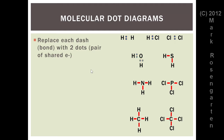Oxygen forms two bonds, so replace each with two dots. Hydrogen sulfide, same exact thing. Ammonia, exact same thing. Phosphorus trichloride has three bonds, giving three pairs of shared electrons. Methane, CH4, has four pairs of shared electrons, and carbon tetrachloride is exactly the same situation.